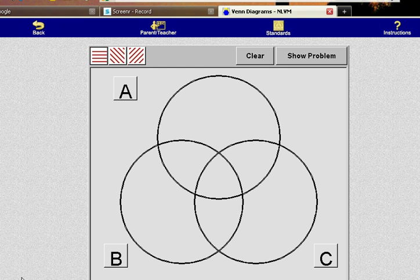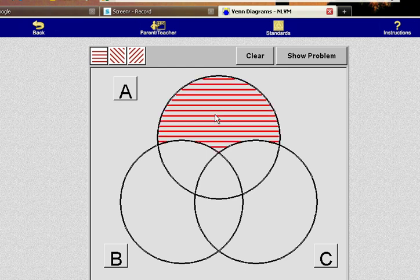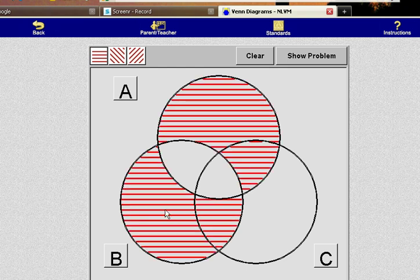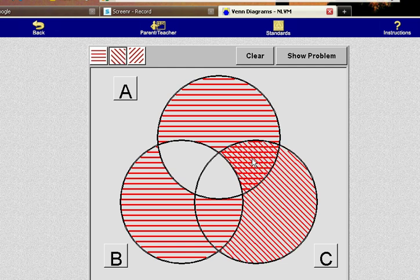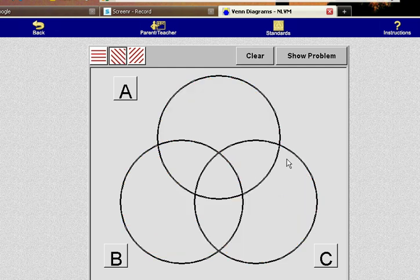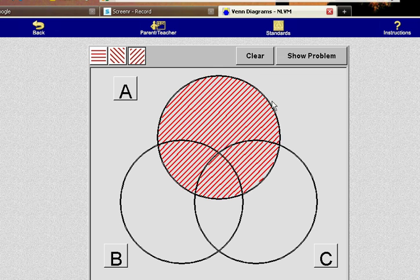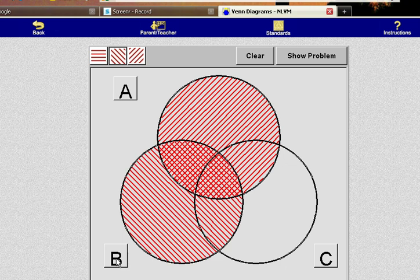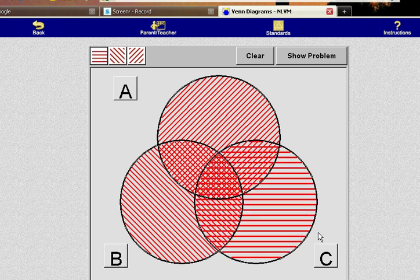Let me go ahead and show you how this works. I can click in these regions and shade them if I want to. If I'd like to shade with a different type of shading I can do it this way. I can clear here. I can shade an entire set A which is this entire set. I can shade an entire set B by hitting this one, and an entire set C like this.